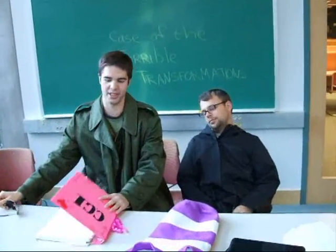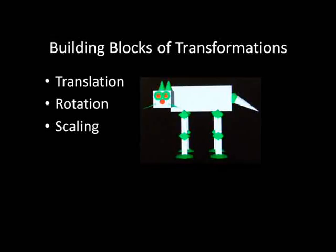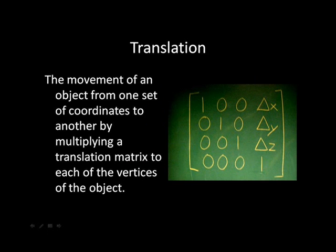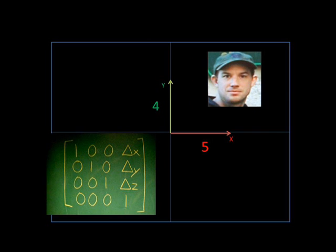So here's what we learned. Let's start by understanding these building blocks Radiosity was talking about: translation, rotation, and scaling. Translations are the movement of an object from one set of coordinates to another. This is done by multiplying a translation matrix to each of the vertices of the object. So let's say we have a 2D coordinate system and an object at the origin of our coordinate system.